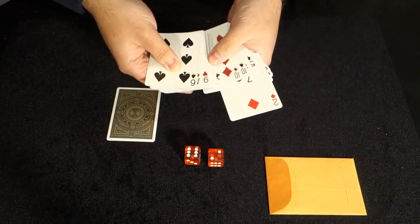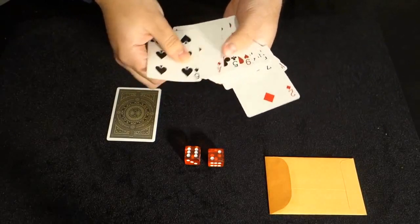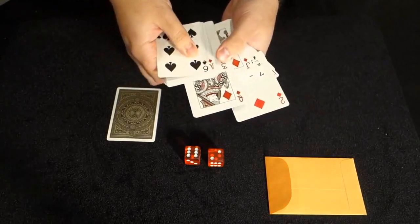And again, you can confirm there is no other two of diamonds in the deck. So had you set top, it would have been one, two, three, four, five, six, seven. The queen of diamonds. Total different card.